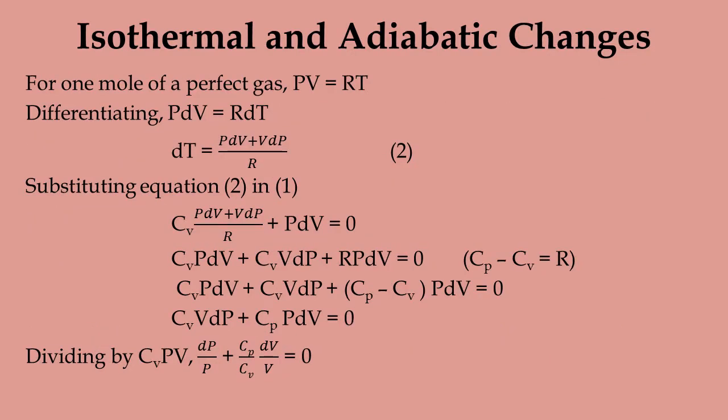For 1 mole of a perfect gas, PV = RT. Differentiating this equation gives the expression for DT: DT = (VdP + PdV) / R. Substituting this expression for DT into the equation, we find Cv·V·dP + Cp·P·dV = 0. Dividing by Cv·P·V gives dP/P + (Cp/Cv)·dV/V = 0.